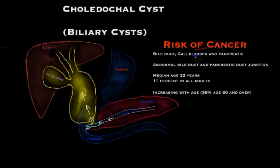It is important to realize that the risk of cancer is not just related to the bile duct but also the gallbladder and the pancreas. The presence of an abnormal communication between the bile tube and the pancreatic duct is a major risk factor in the development of cancer, due to reflux of pancreatic juice into the bile tube. The median age of development of cancer is around 32. The overall risk of cancer is 11 percent in adults, but it rises from as low as 10 percent in the first 30 years to nearly 40 percent at age 60 and over.